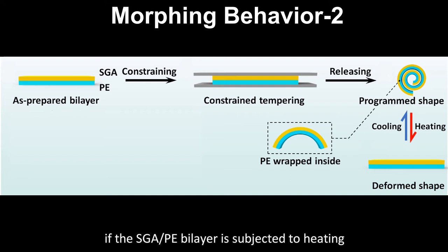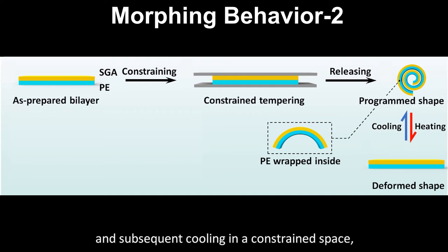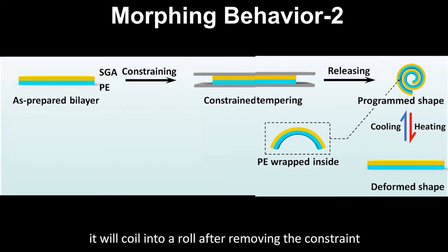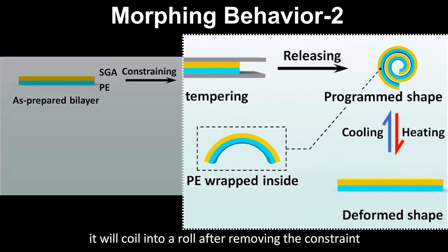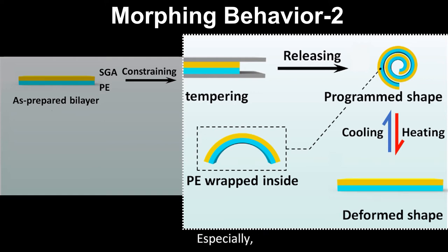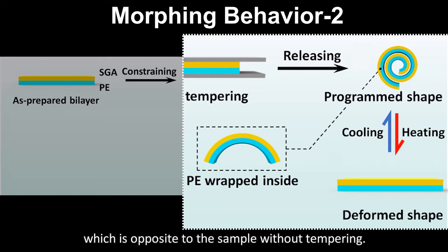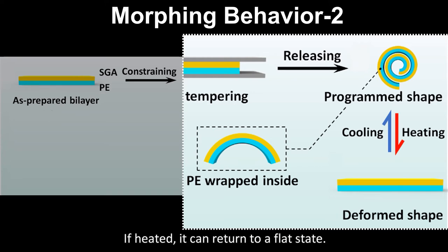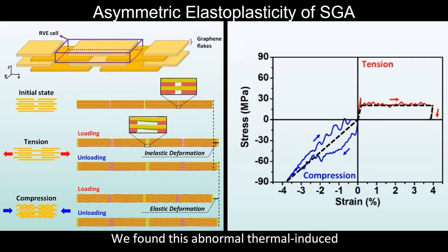Interestingly, if the SGA-PE bilayer is subjected to heating and subsequent cooling in a constrained space, it will coil into a roll after removing the constraint at room temperature. Especially, the PE layer is wrapped inside, which is opposite to the sample without tempering. If heated, it can return to a flat state. We found this abnormal thermal-induced morphing behavior is due to the asymmetric elastoplastic properties of SGA.